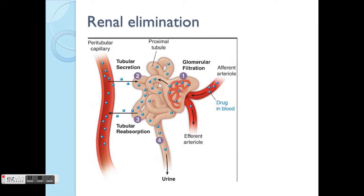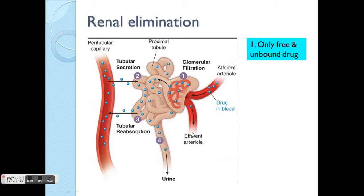Briefly about the elimination route — there are a few processes here. First is glomerular filtration. Second is secretion. Third is reabsorption. And obviously the last part is the excretion of urine itself.